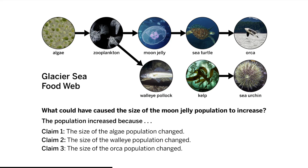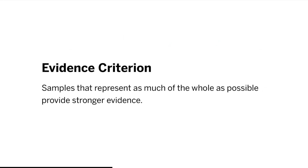But we need more evidence to be sure about what happened in the Glacier Sea ecosystem. As you work to explain why the jelly population is increasing, use evidence you've collected about why populations can change size — consider evidence you gathered from sim tests and from reading articles.